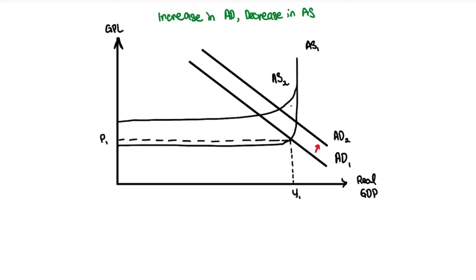Now you want to identify which are the two new curves and find the intersection point. So AD2, AS2, the intersection point is over here. The new curve intersects here, so this will be our new real GDP. You can draw the line down, you have got Y2. And on the other hand, you have got a new price level which is going to be P2 over here.